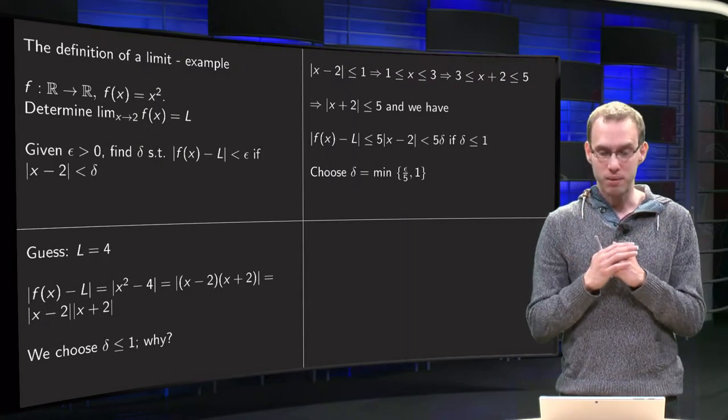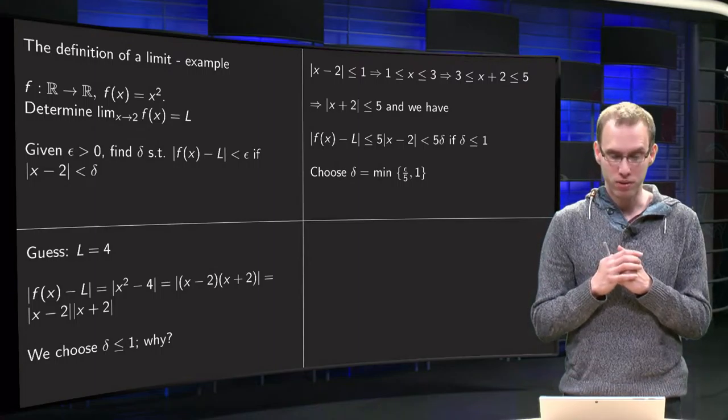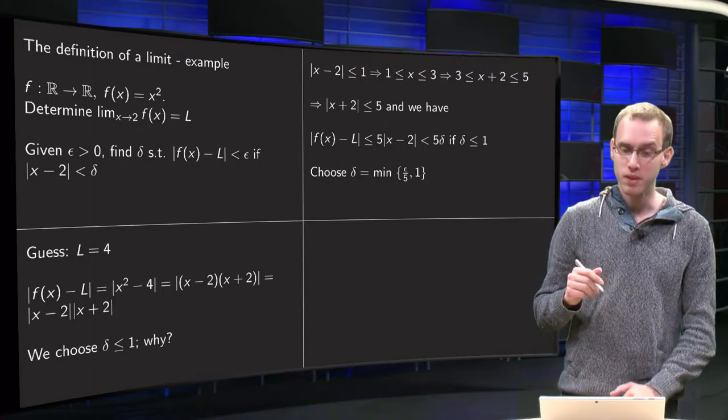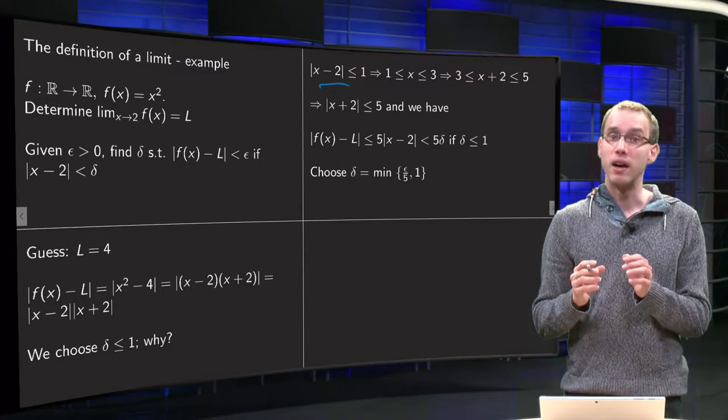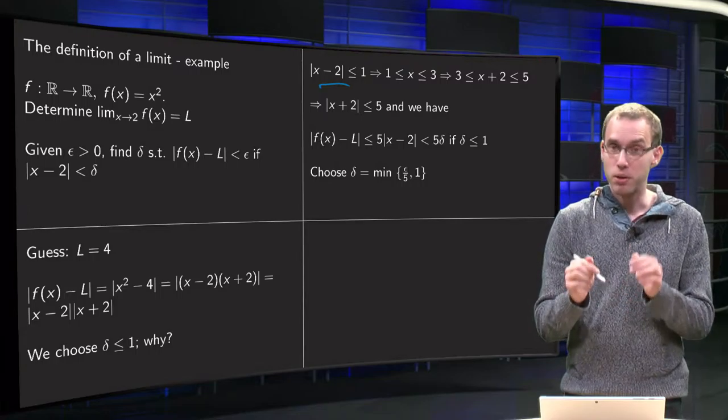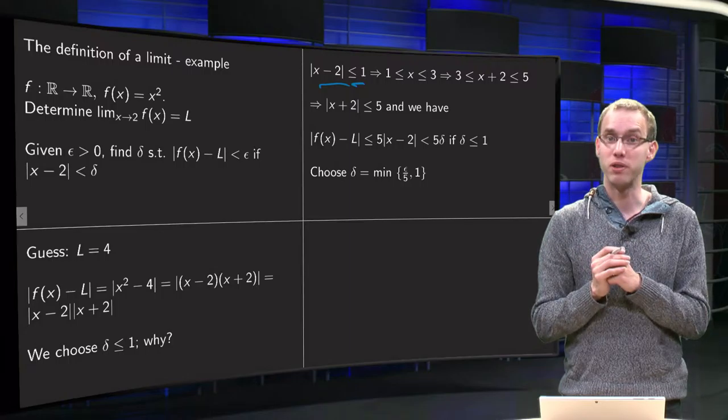Because if delta is smaller or equal than 1, that means |x minus 2| is smaller or equal than 1, so |x minus 2| smaller or equal delta means |x minus 2| smaller or equal than 1, which means that our x is between 1 and 3...